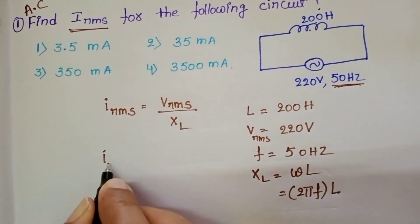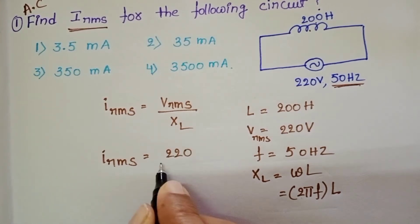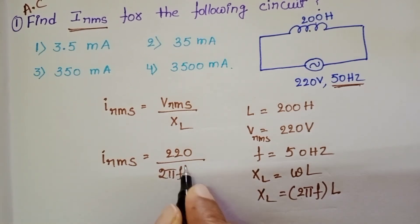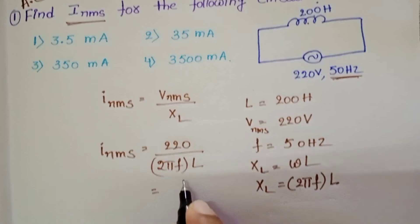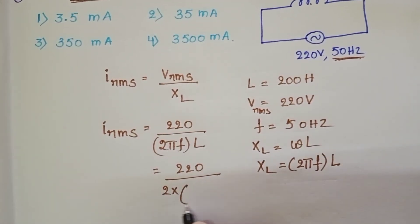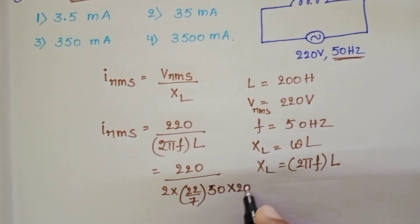Now find out IRMS value. In place of VRMS substitute 220, and in place of XL substitute this formula 2 pi F into L. 220 by 2 into in place of pi 22 by 7, and the frequency 50, and the inductance 200.